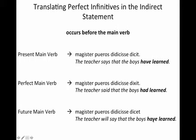For perfect infinitives, the rule is that the perfect infinitive always occurs before the main verb. With a present main verb: 'The teacher says that the boys have learned.' With a perfect main verb 'dixit,' we have to push the infinitive even further into the past: 'The teacher said that the boys had learned.' And with a future main verb, it mirrors the present: 'The teacher will say that the boys have learned.'